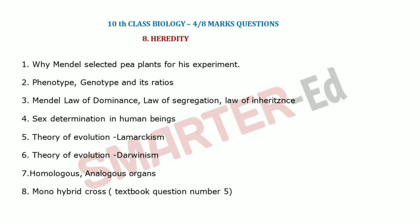Lesson eight covers heredity. Topics include: why Mendel selected pea plants for his experiment, phenotype and genotype with ratios (important for four marks), Mendel's laws of dominance, segregation, and inheritance (important for eight marks), sex determination in humans, theories of evolution including Lamarckism and Darwinism, homologous and analogous structures with examples, and monohybrid cross. These are the important questions in 10th class biology. For any doubts, mention them in the comment box and the next video will cover important two-mark questions.